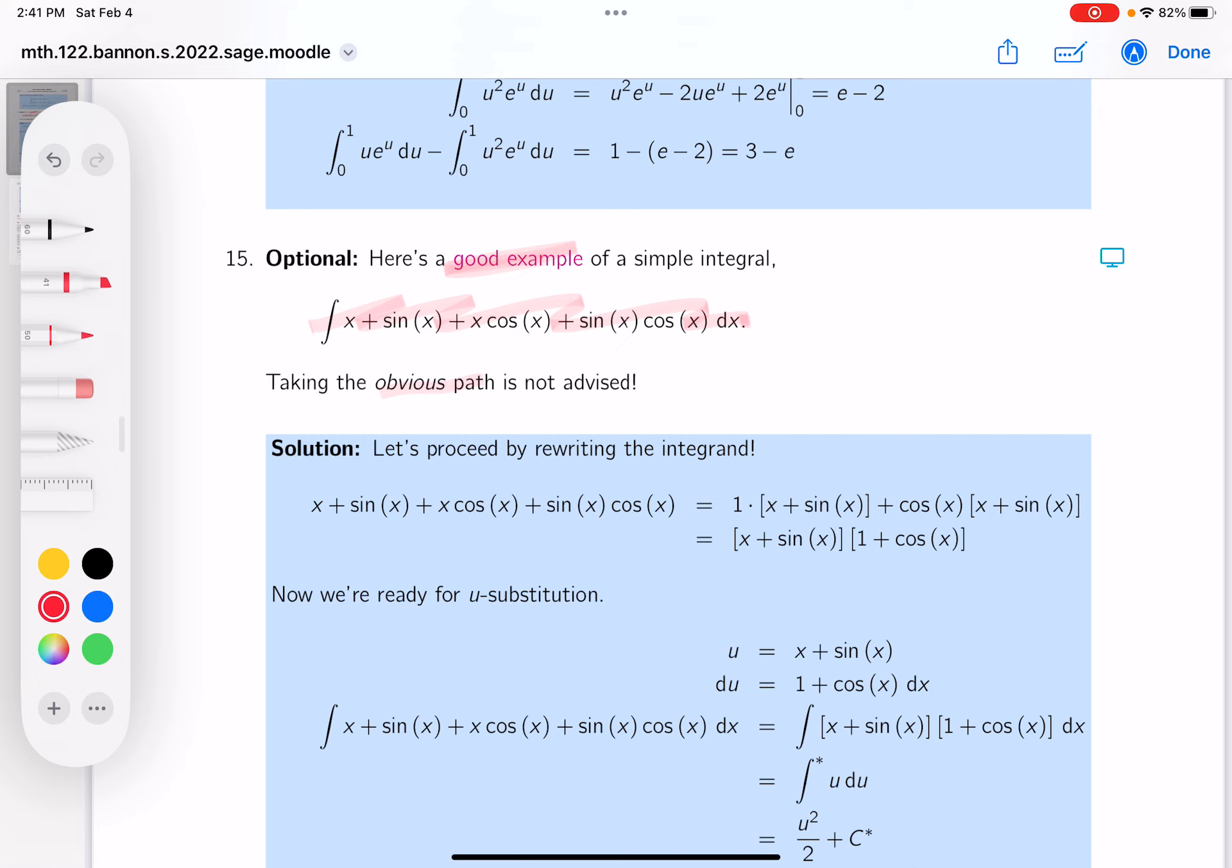The less obvious path is by rewriting the integrand. The way I did that was I kind of looked at four terms and I divided into two separate groups, and I factored those groups separately. And then I notice I get this over here, which I'm starting to look at saying, gee, a u substitution would work on that, certainly.